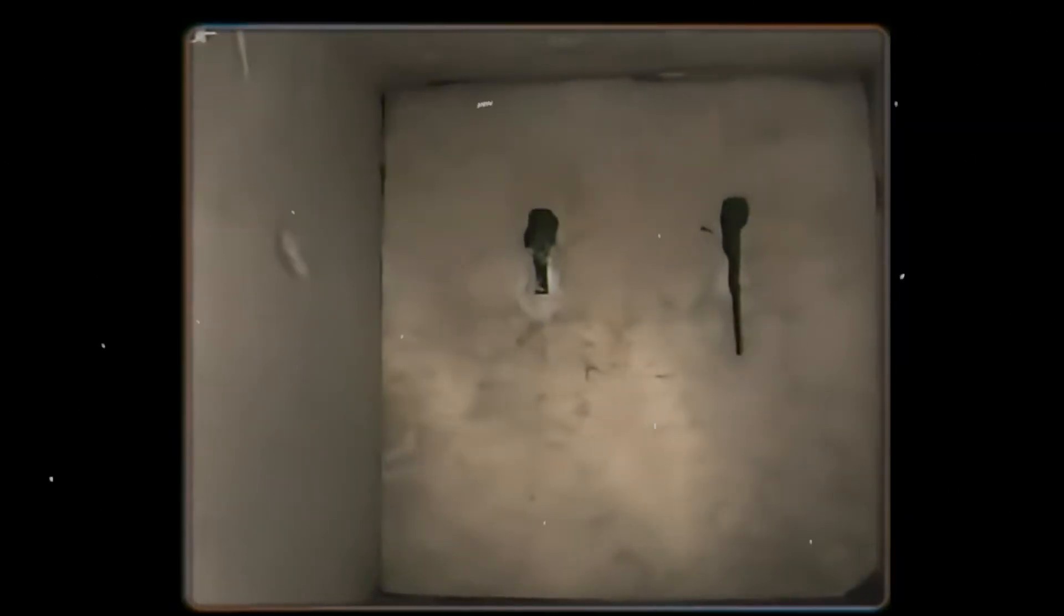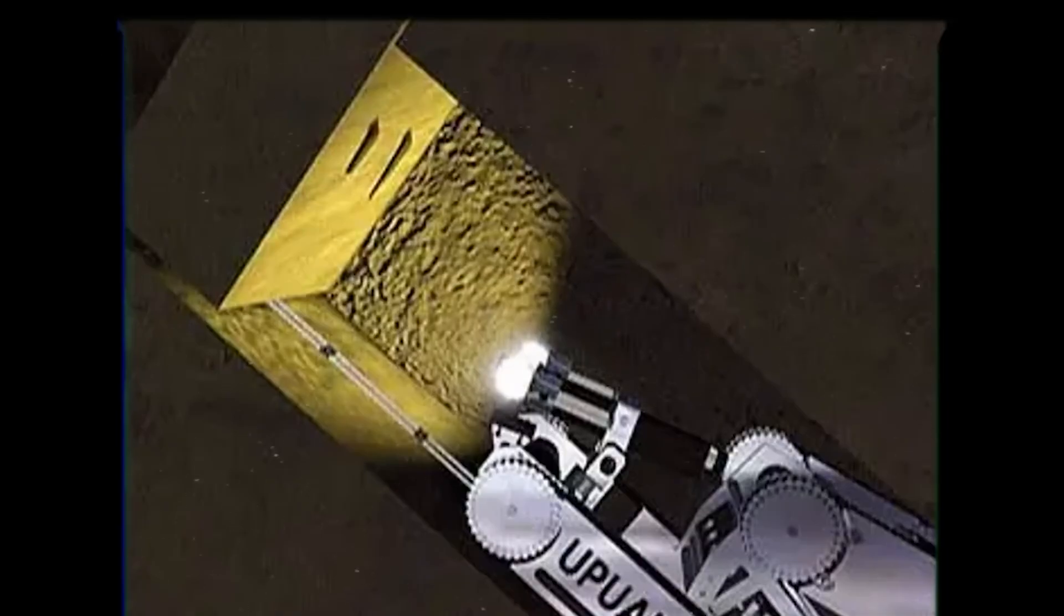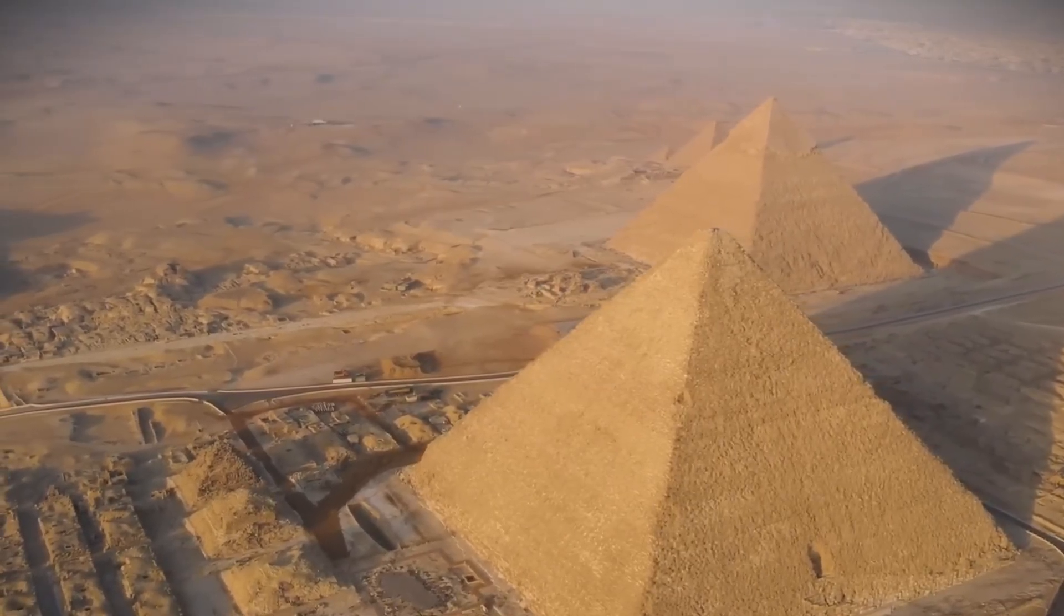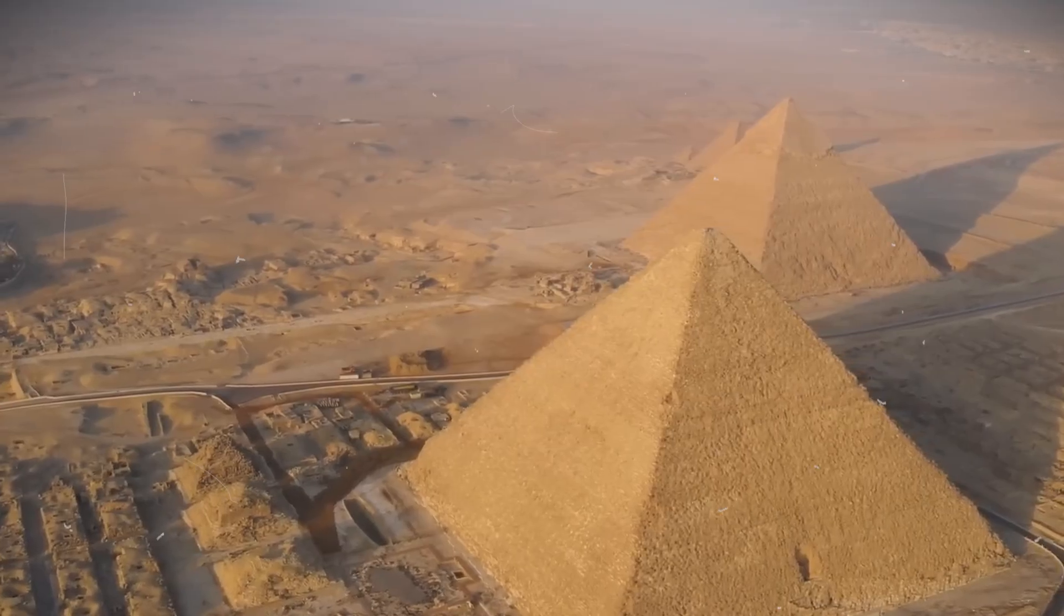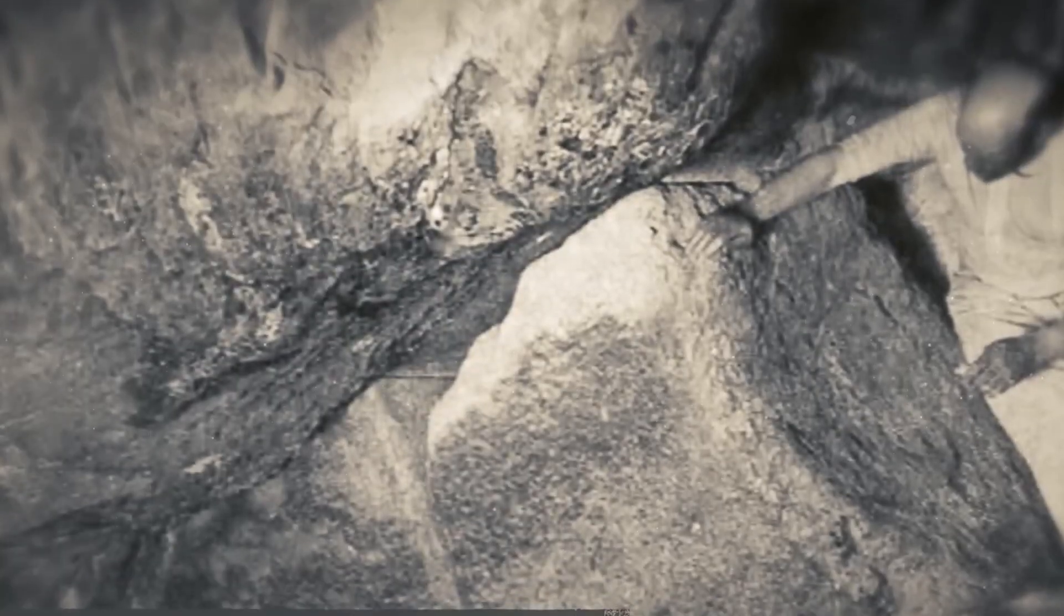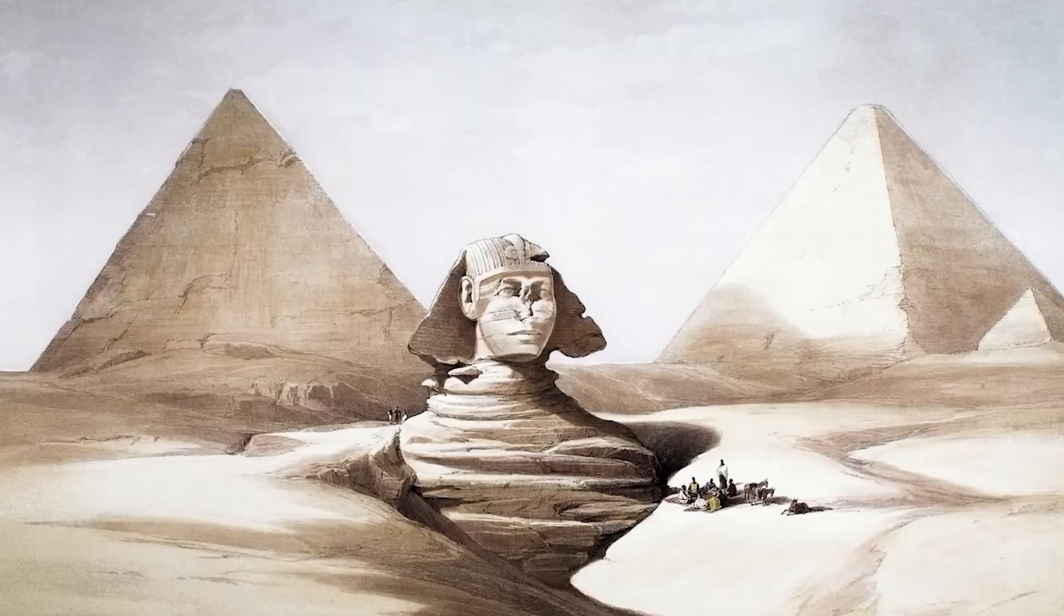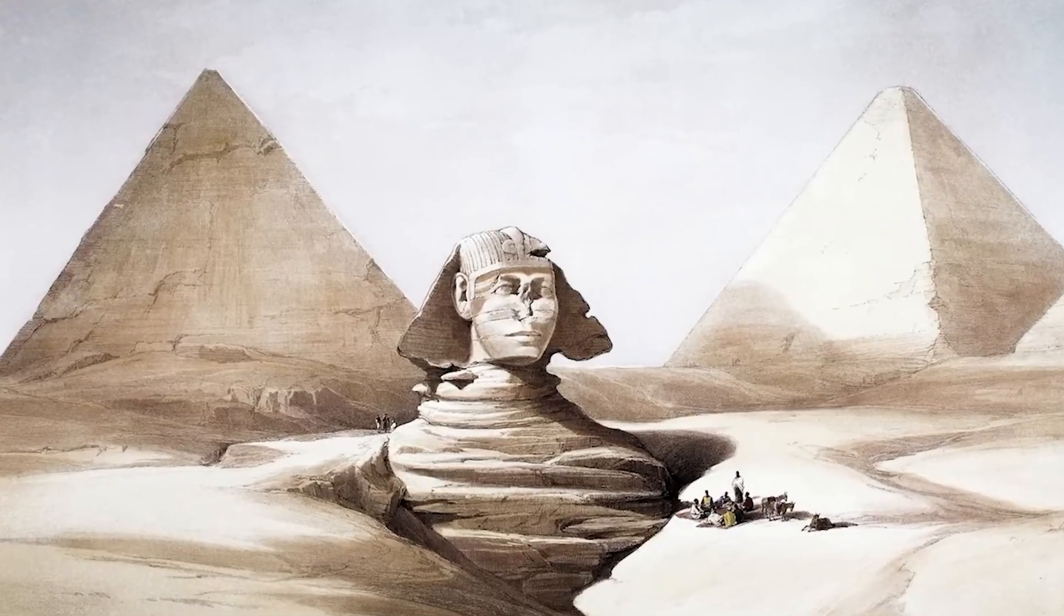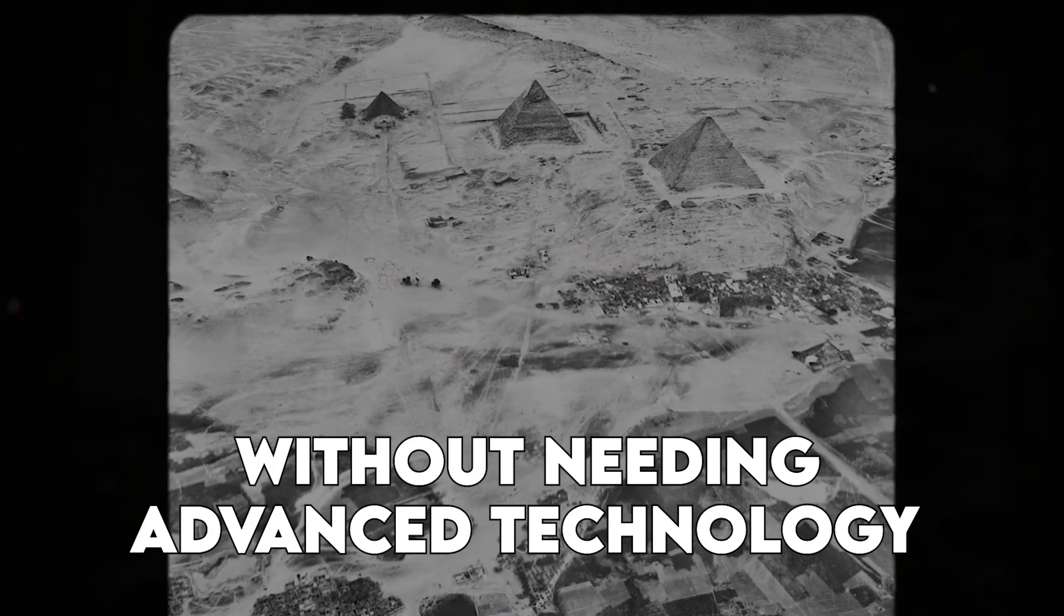In 2018, a group of researchers found a possible answer at an ancient quarry in Hatnub, used during the same time the pyramids were built. There, they discovered a sloped ramp with staircases and holes for wooden poles. This setup may have helped workers pull heavy stones uphill using a pulley-like system with ropes. If similar ramps were used at Giza, it would explain how the Egyptians managed to raise stones so high without needing advanced technology.